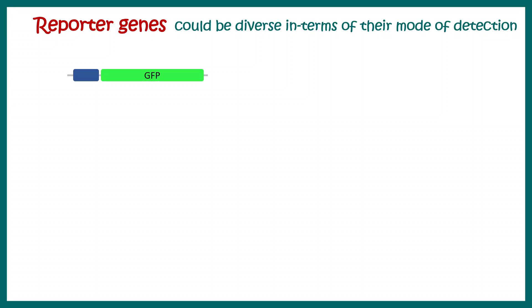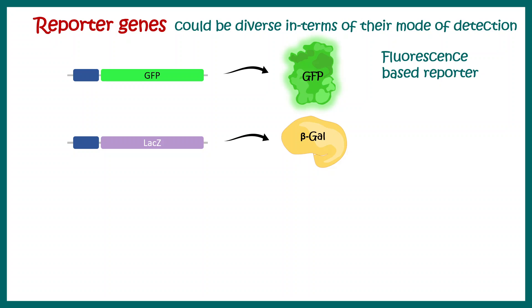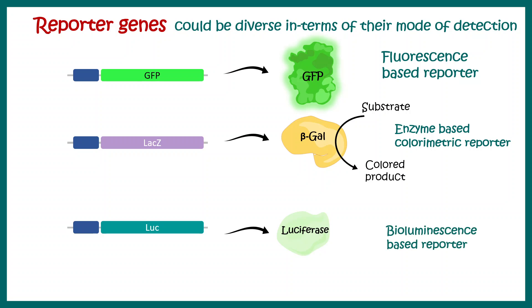There are different modes by which we can visualize a reporter gene. The most common one is GFP, where the GFP gene sequence gives rise to GFP protein that fluoresces and can be detected — this is a fluorescence-based detection, very popular today. There can also be enzymatic detection, where the lacZ gene under the promoter codes for beta-galactosidase; when substrate is provided it produces colored products, making it an enzyme-based colorimetric reporter. There can also be a luciferase-based reporter, which is a bioluminescence-based reporter encoding a luciferase enzyme that gives rise to detectable bioluminescence.